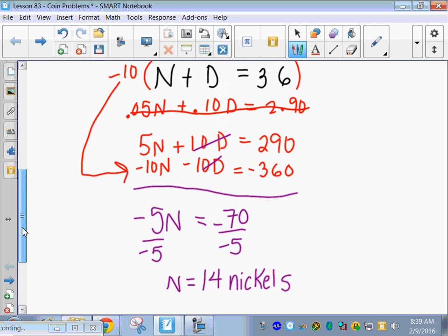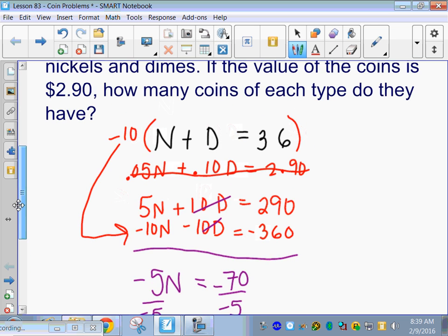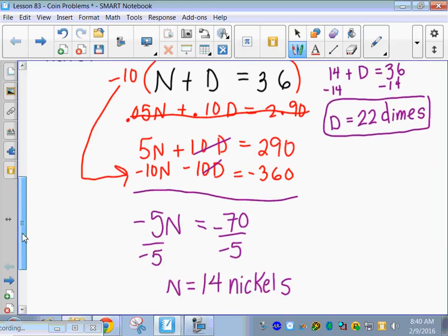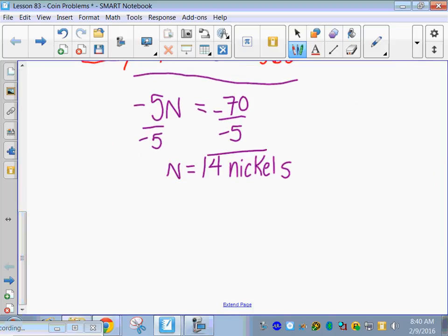Okay, we do need to go back and solve. You can plug in wherever you want, but the easiest one to plug in is this original N plus D is 36. The total number of coins is 36. We now know that we have 14 nickels plus a certain number of dimes has to equal 36. So, I can subtract 14 from both sides. And now we know that for our dimes, there are 22. Alright, so 22 dimes and 14 nickels.